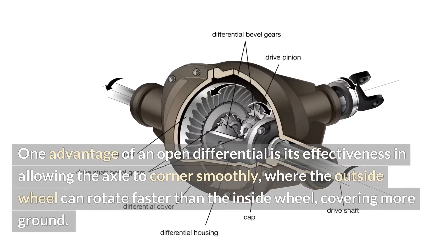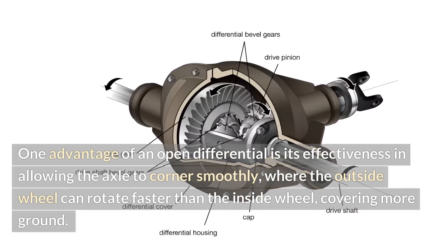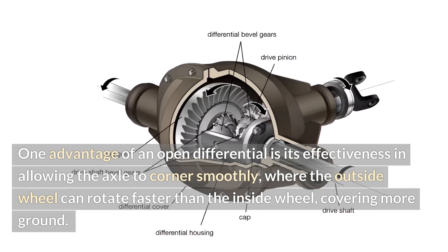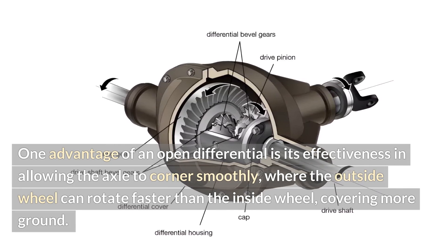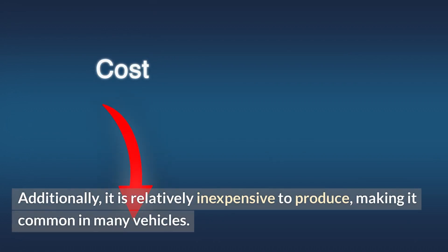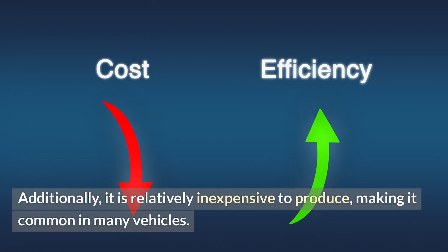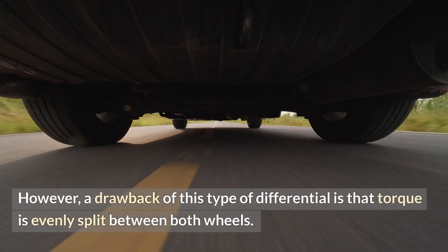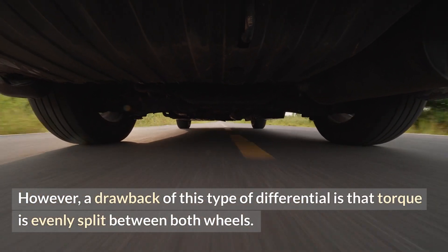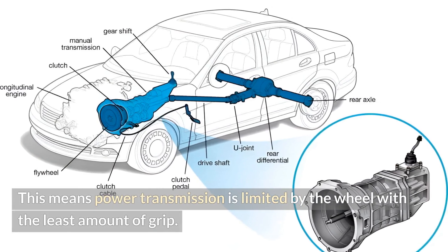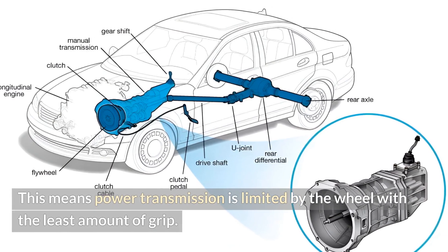One advantage of an open differential is its effectiveness in allowing the axle to corner smoothly, where the outside wheel can rotate faster than the inside wheel, covering more ground. Additionally, it is relatively inexpensive to produce, making it common in many vehicles. However, a drawback is that torque is evenly split between both wheels, meaning power transmission is limited by the wheel with the least amount of grip.